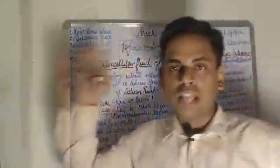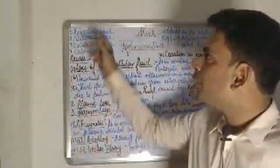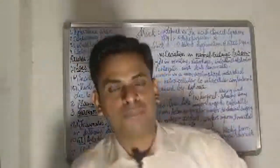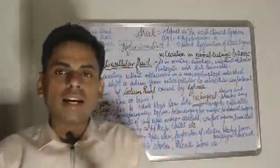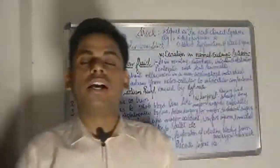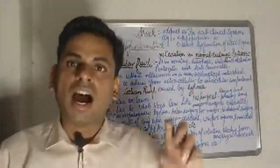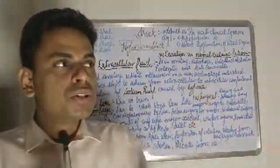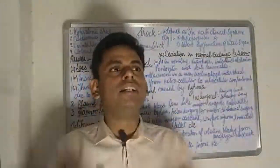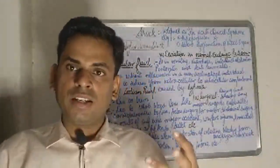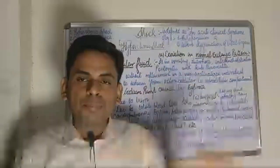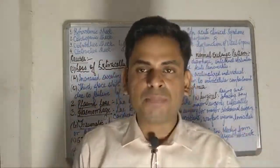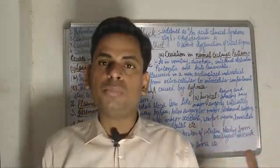In general, shocks can be classified into hypovolemic shock, cardiogenic shock, distributive shock, and obstructive shock. Looking at hypovolemic shock — as the name suggests, 'hypo' means less and 'volemic' means volume — what happens is the amount of blood volume is decreased in the body. Hypovolemic shock is generally manifested when the body loses one-fifth of its total blood volume.